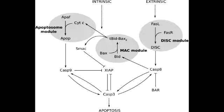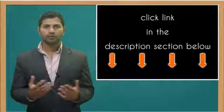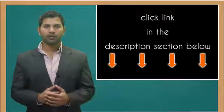The intrinsic pathway of apoptosis also occurs when cells are exposed to injurious stimuli, such as radiation, toxins, or hypoxia.